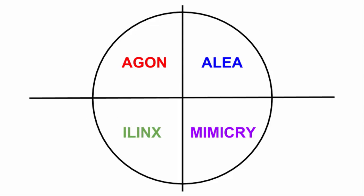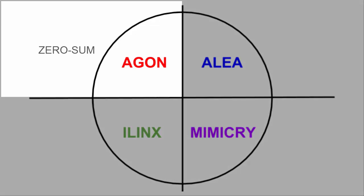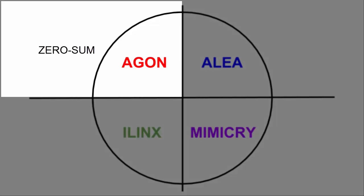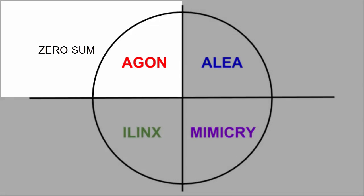Let's look at some examples of games that fall squarely into Caillois's types. Examples of Agon would be chess or wrestling. Players are in direct competition with each other, and the goal is to eliminate the other. This type of game is sometimes described as zero-sum, because one player has to lose for the other to win.